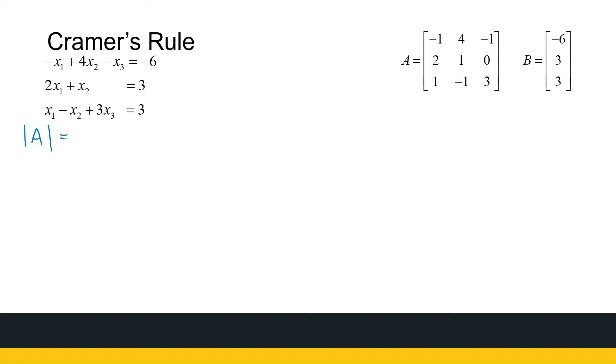So let's start by calculating the determinant of A. I'm going to use the second row to calculate the determinant of A, because there's a zero in it, so it's less calculations to do and less chance for mistakes.